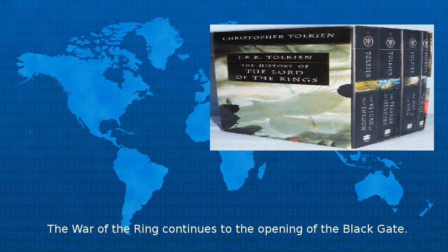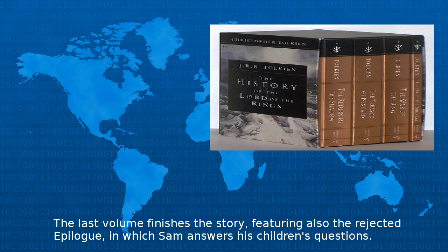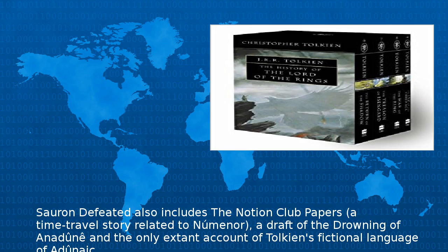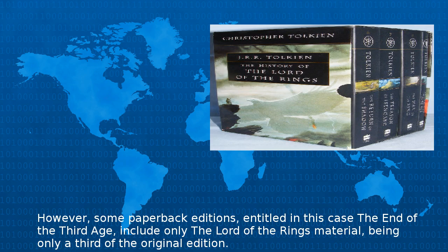The War of the Ring continues to the opening of the Black Gate. The last volume finishes the story, featuring also the rejected epilogue in which Sam answers his children's questions. Sauron Defeated also includes the Notion Club Papers, a draft of the Drowning of Númenor, and the only extant account of Tolkien's fictional language of Adûnaic. However, some paperback editions, entitled The End of the Third Age, include only The Lord of the Rings material, being only a third of the original edition.